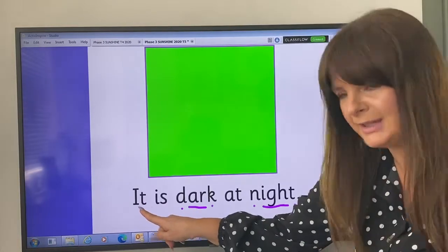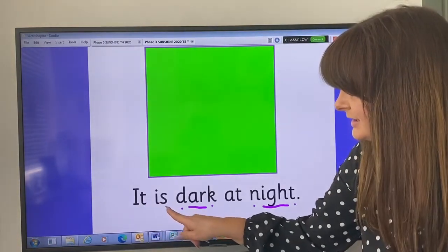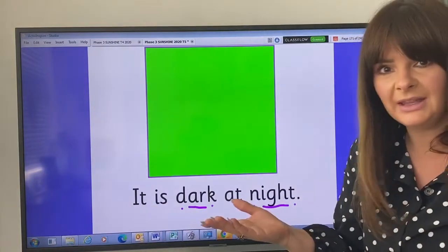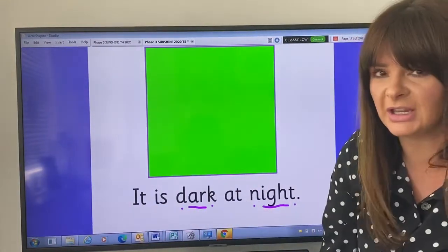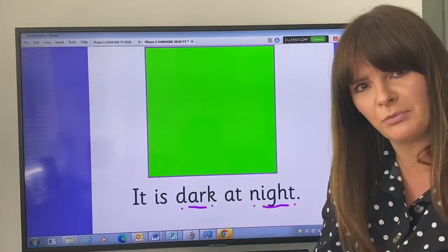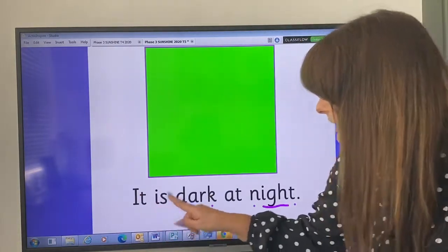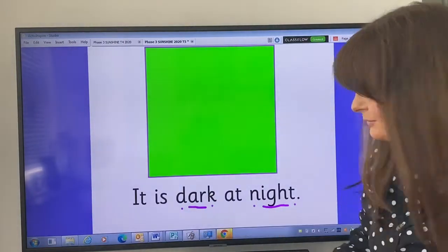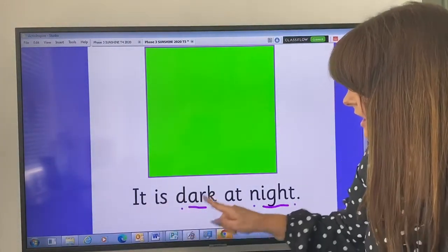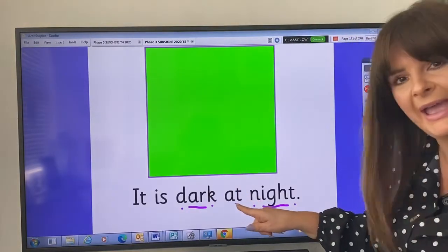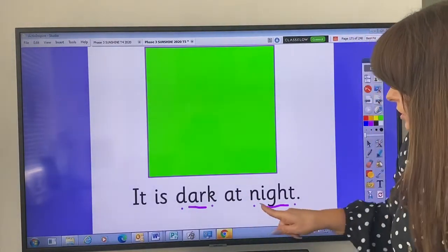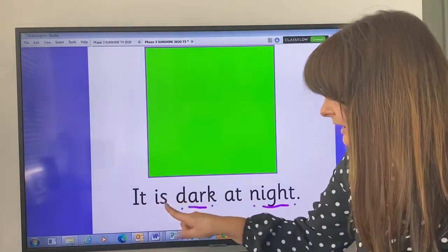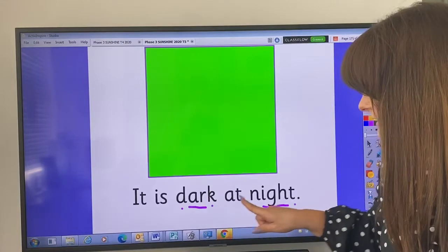Now we're going to do what we always do in phonics. We're going to read the sentence and see what's under our mystery shape. So let's have a little look here. It, it, it's, is. Now some of you might read it is without sounding out, and if you do, brilliant. If you can't just now, that's all right. You just need to keep practicing. It is dark. Dark. Well done. It is dark at, at night. Night. Let's read it back. It is dark at night.